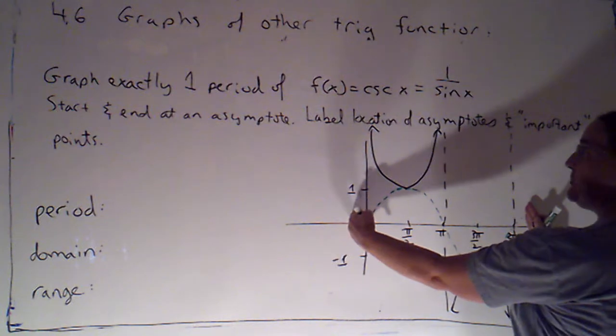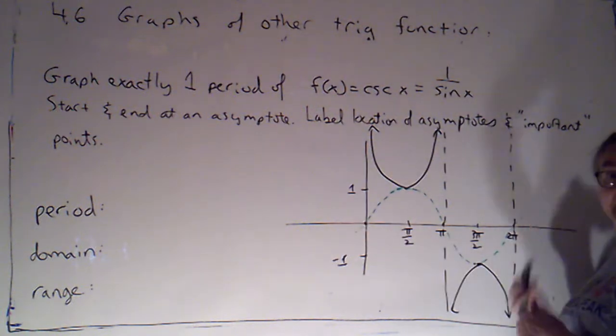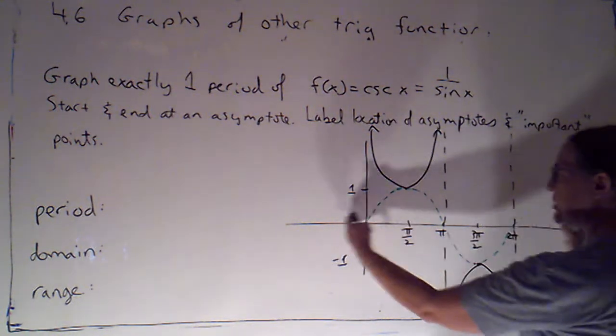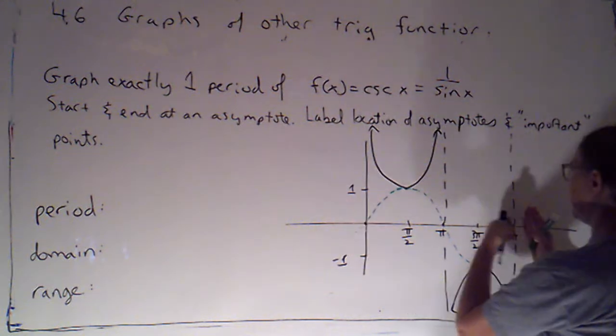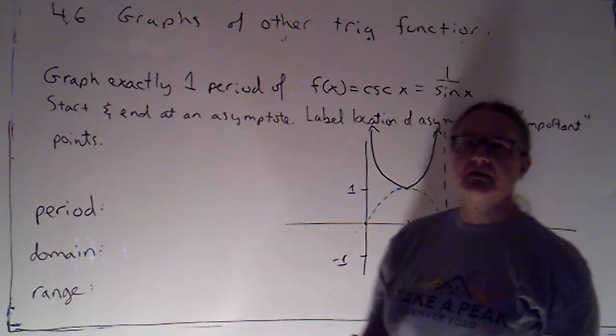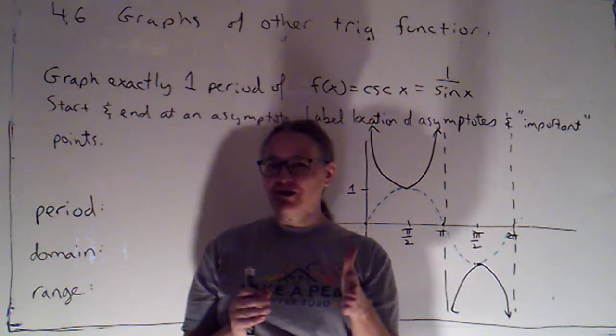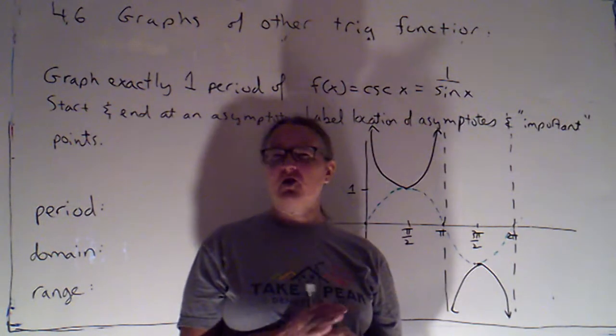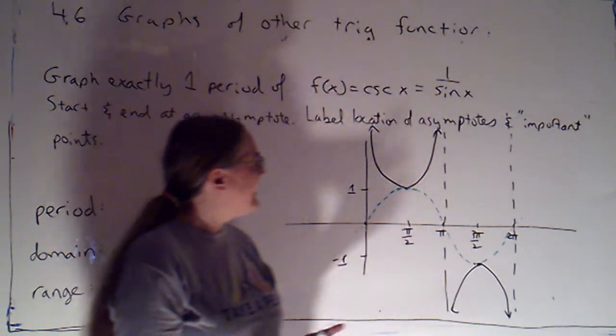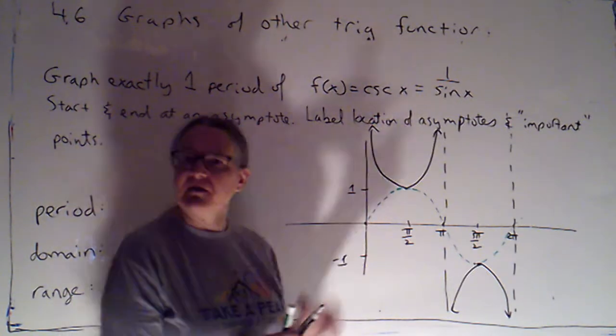This would be exactly one period starting and ending at an asymptote. So I didn't need to adjust if I just graphed from zero to two pi as I did with cosine, because cosine doesn't start at a zero value, so I don't want to actually start my graph of secant at zero because then I'd be starting in the middle of one of these u's.